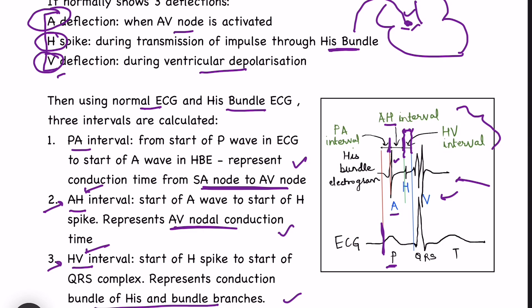Based on these intervals we can determine the site of the heart block. If the PA interval is prolonged, that means somewhere above the AV node is the problem. AH interval prolonged means the problem is in the AV node. And HV interval prolonged means below the AV node — possibly in the bundle of His — is where the conduction delay is occurring.